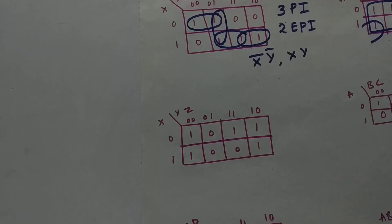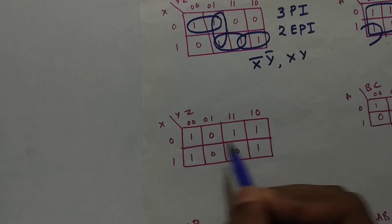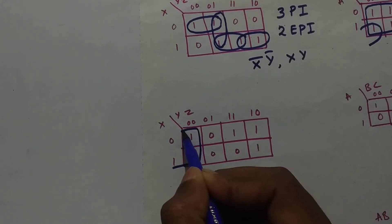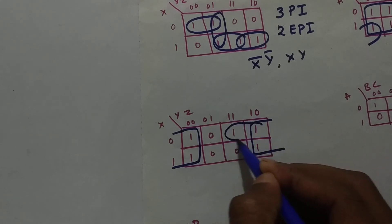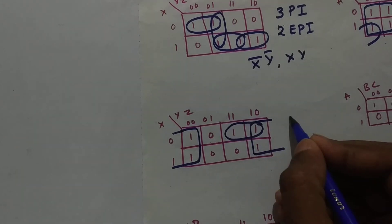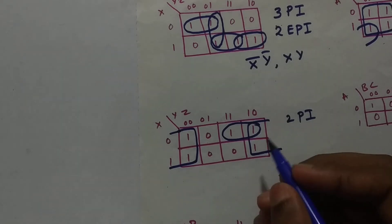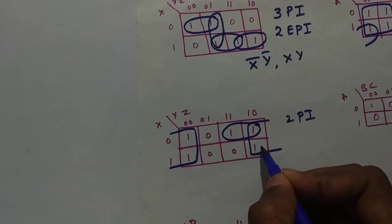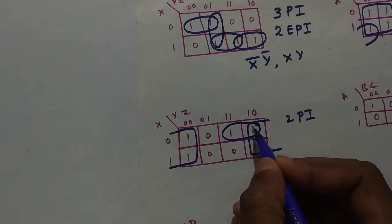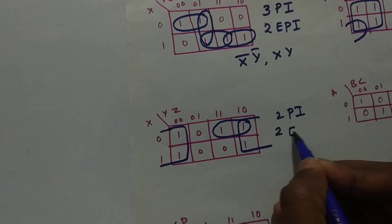Now let's go to another example. First we need to form a bigger group. As you can see, this is not the bigger group here — we can form a quad. So the quad is the bigger group. Now we can form a pair here. So we have two prime implicants — it's just the grouping of min terms that gives us the prime implicants. Now let us consider how many essential prime implicants there are: this one, this one, and this one are each covered by a single group — the quad — and this one is covered by a single group, the pair. So we have two essential prime implicants.